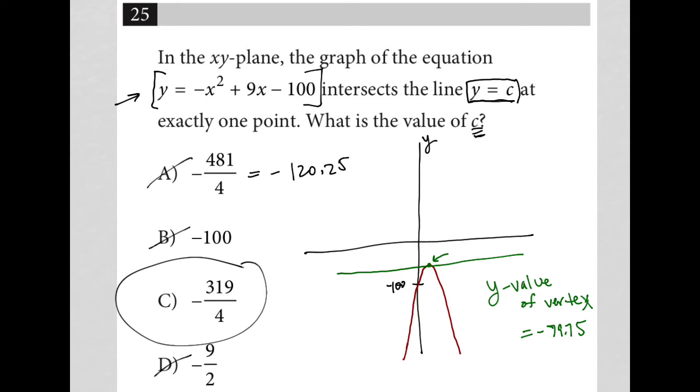So the correct answer here must be choice c, but I'll try it. 319 divided by 4, yes, this is equal to negative 79.75. So that's the correct answer, choice c.